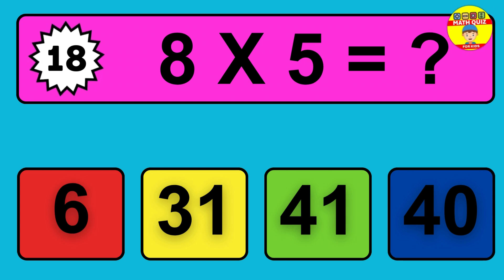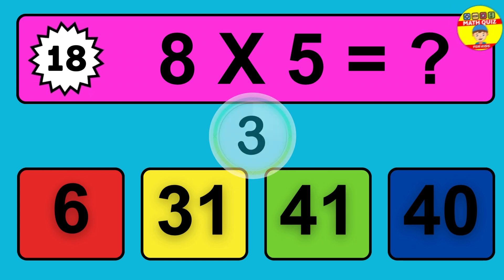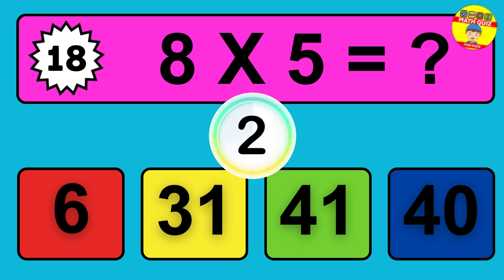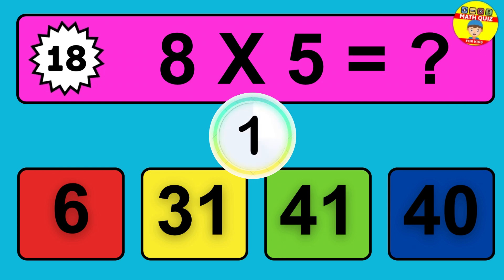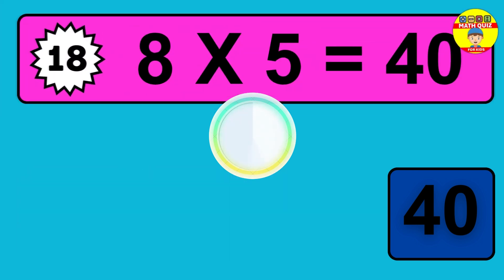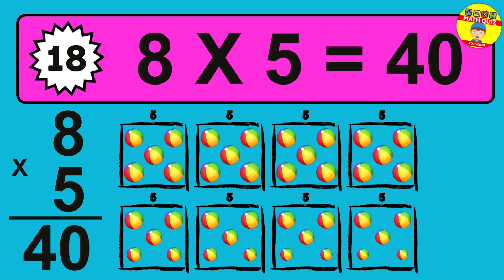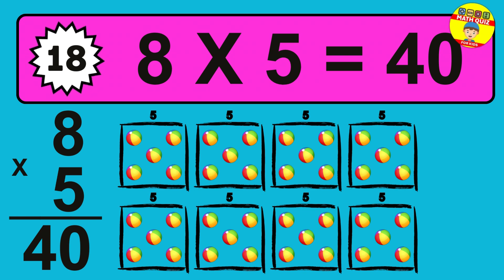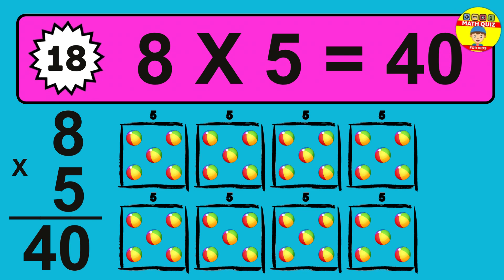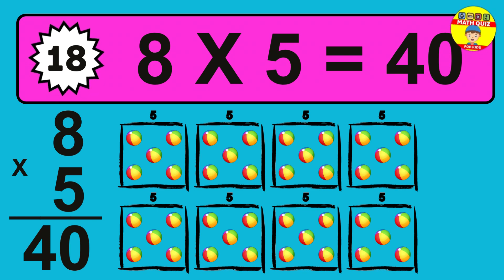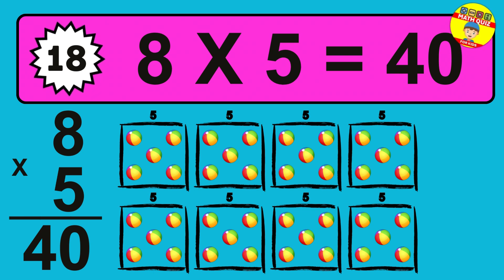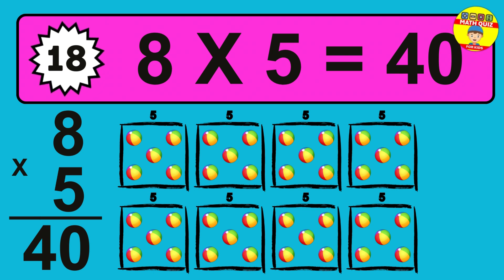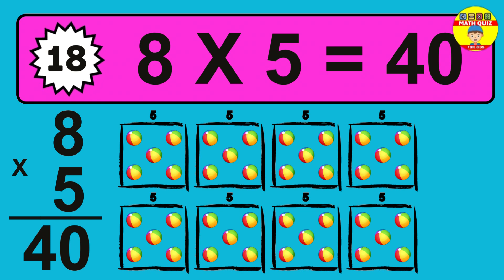Question 18. Eight times five equals what? So the answer is eight times five is forty. To calculate, we have eight groups with five balls each one. So how many balls do we have? Forty balls.